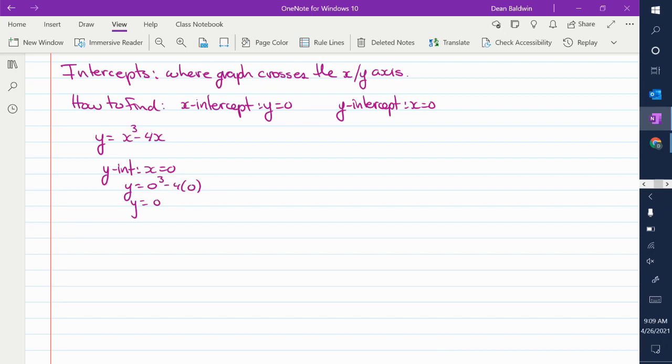Then what I want you to do for the y-intercept is to write it as an ordered pair. So this would be zero, zero. X, y ordered pair.